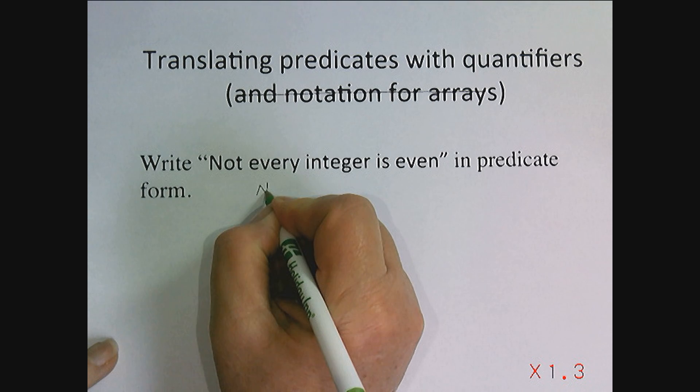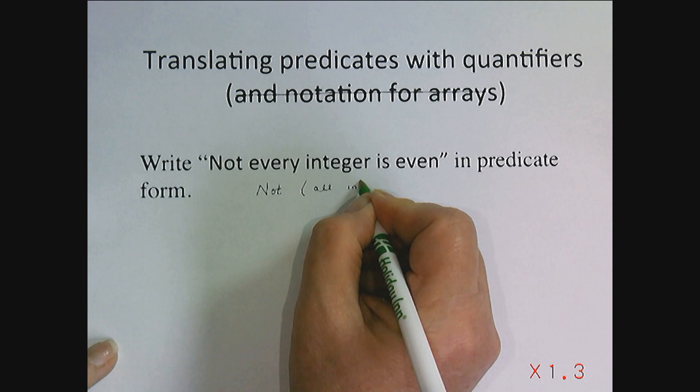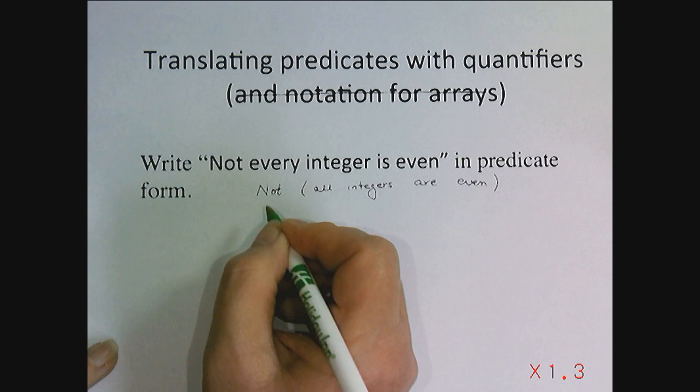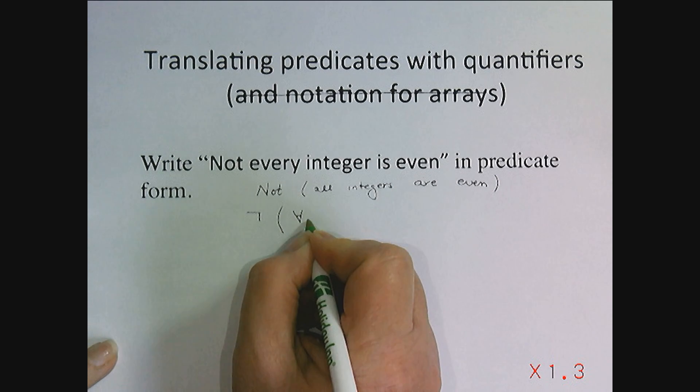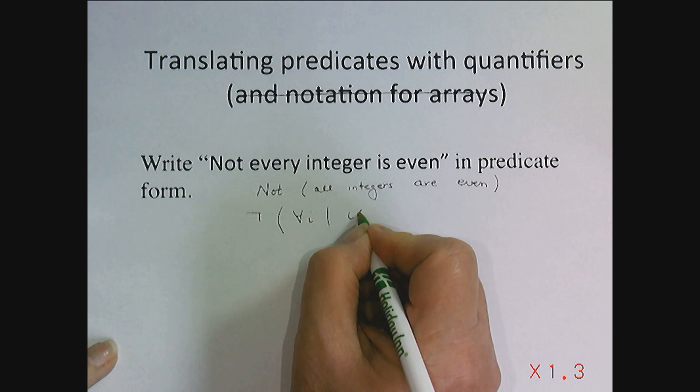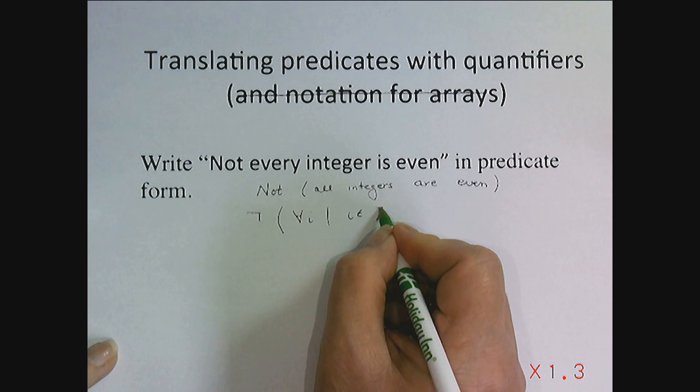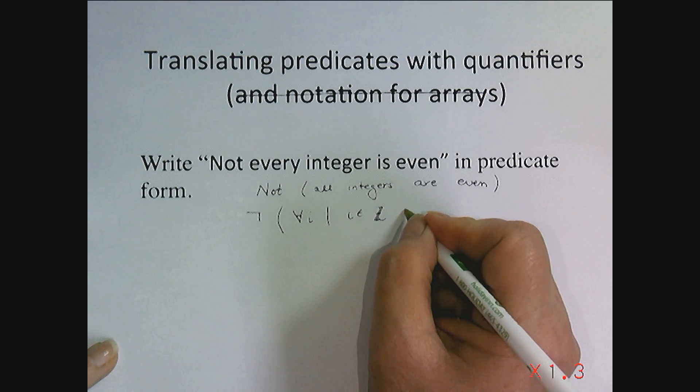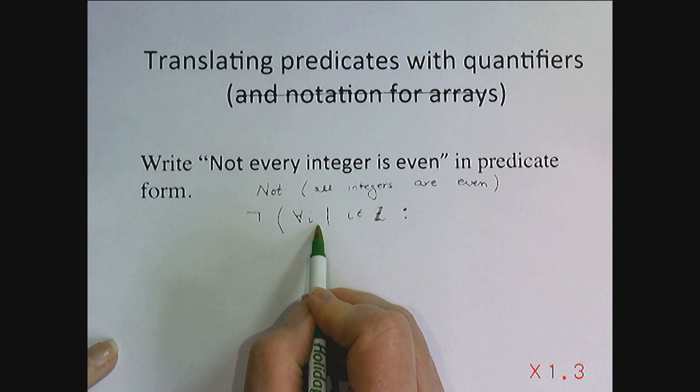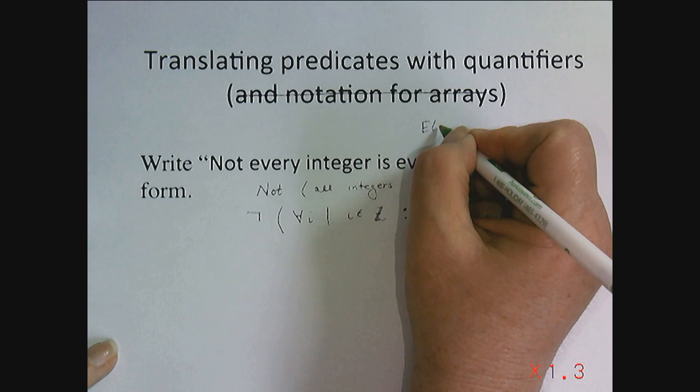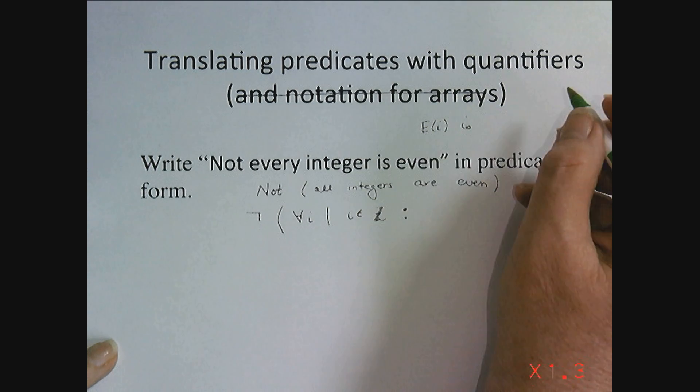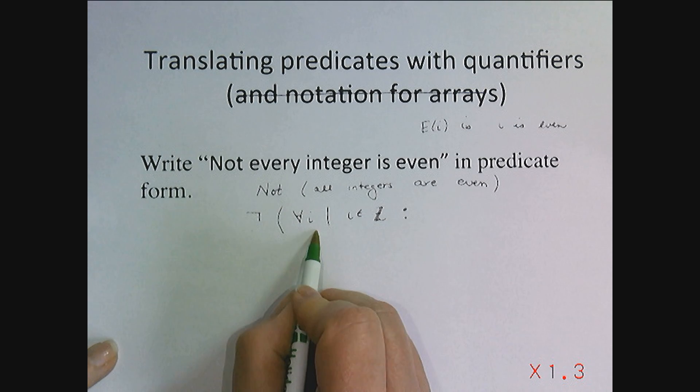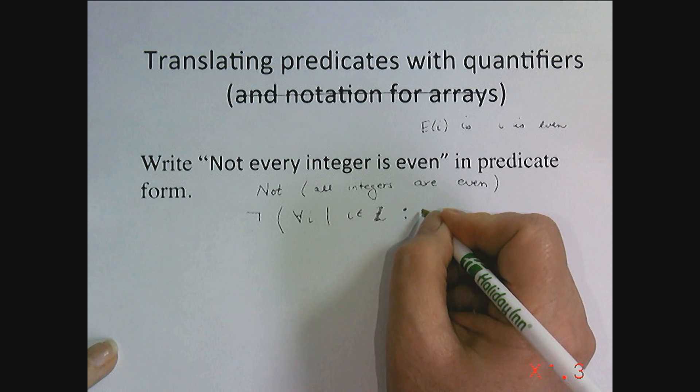Isn't that not all integers are even? So shouldn't I write this as not for all i, i an integer. I could write that as i is an element of Z because Z is usually used to represent integers. Not all integers are even. Let's let E(i) represent the predicate that i is even. So we could write this as not for all i, i an integer, E(i).